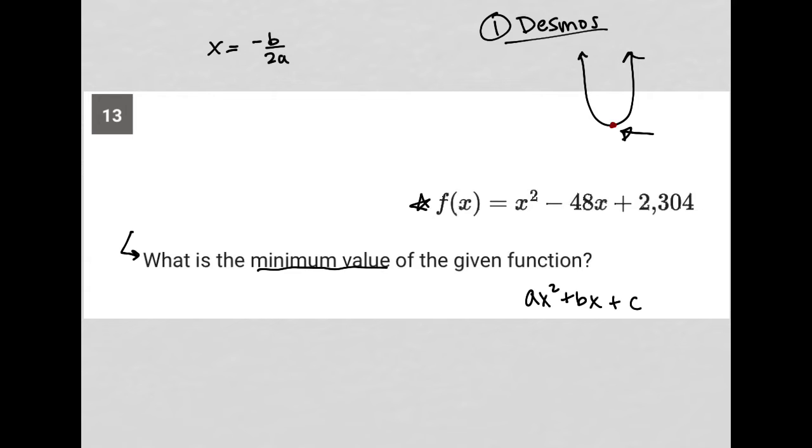Which means that for us, a should be here in front of the x², which makes it 1. b is the -48, that's b, that's a. And c is 2,304.